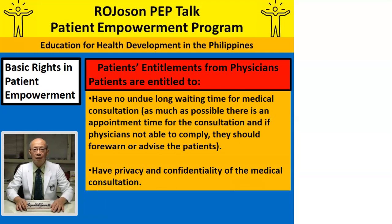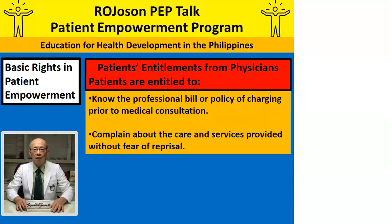Patients are entitled to keep their medical records from other physicians and other hospitals and clinics, and for physicians not to keep them without giving back or giving a copy to the patients. Patients are entitled to have no undue long waiting time for medical consultation — as much as possible, there is an appointment time, and if physicians are not able to comply, they should forewarn and advise the patients. Patients are entitled to have privacy and confidentiality of the medical consultation, and to know the professional bill or fee prior to consultation.